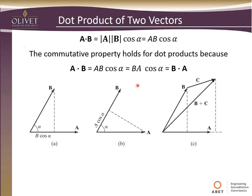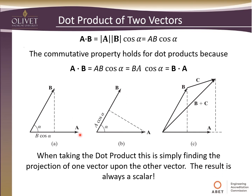What does taking a dot product mean? If we have vector A and vector B with angle alpha between them, multiplying their magnitudes times cosine of that angle gives us the scalar length B·cosine(alpha). Many people refer to the dot product as finding the projection of one vector onto another — the result is always scalar. One way to think of it: if you shone a light straight down on the arrangement, the dot product would be the shadow cast on A by B.